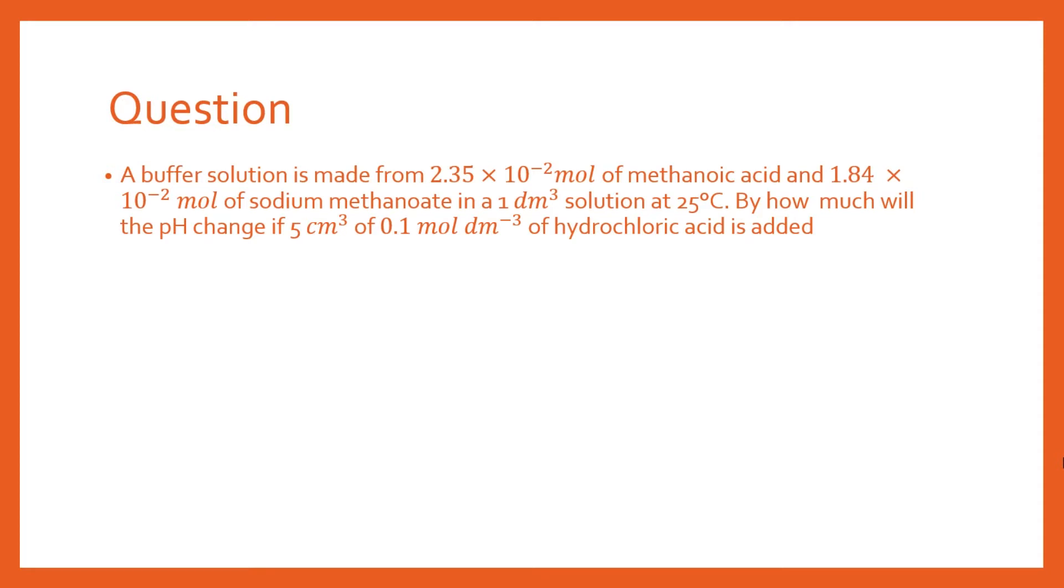We've got a buffer solution, which is made from some methanoic acid, which is a weak acid, and we've also got some sodium methanoate that's going to be the conjugate base, and you'll notice that it's a 1 dm³ solution. So that will mean that your moles here is also going to be a concentration, and then we're doing it at a standard temperature of 25 degrees, and the question is by how much will the pH change if we add some hydrochloric acid to it.